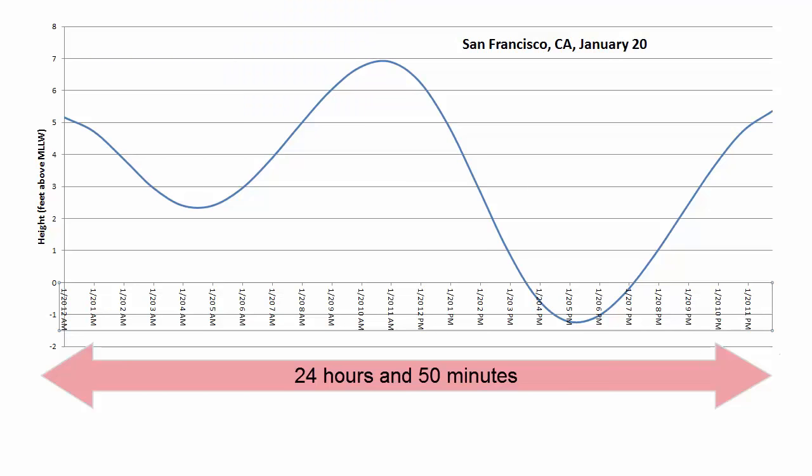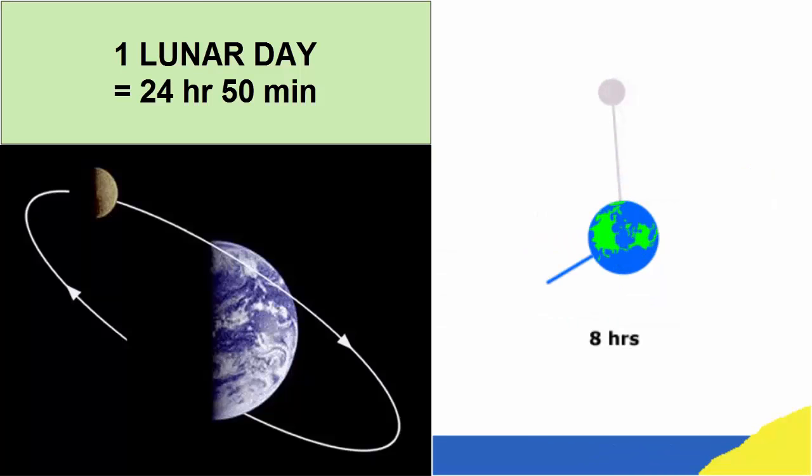First of all, we know that most tidal waves have a period of one wave every 12 hours and 25 minutes, otherwise stated as two waves every 24 hours and 50 minutes. What else has that same period? Earth's rotation relative to the Moon is also 24 hours and 50 minutes.